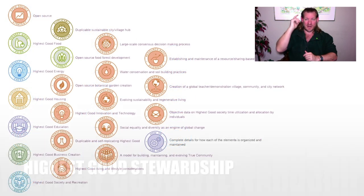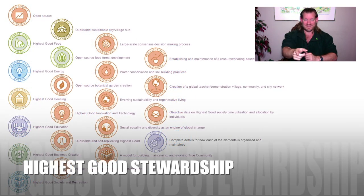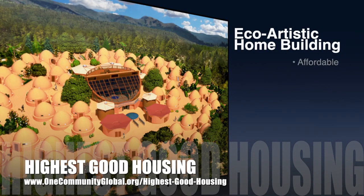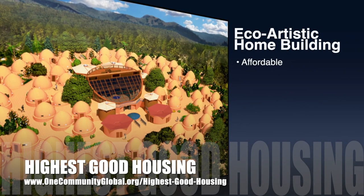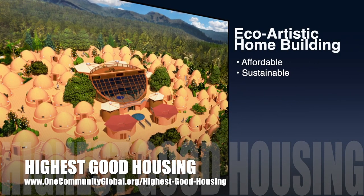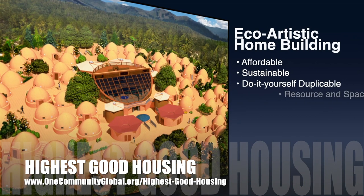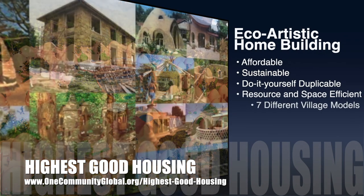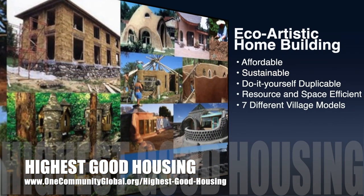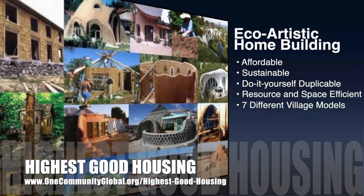The One Community approach to highest good housing is eco-artistic home building that is affordable, sustainable, do-it-yourself, duplicable, resource and space efficient — consisting of seven different sustainably constructed village models.